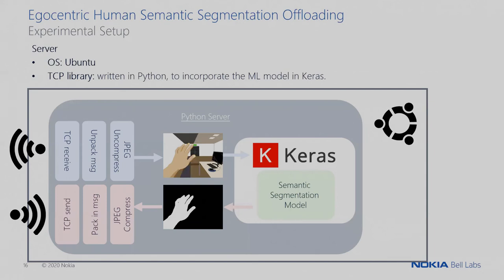On the server side we have a similar procedure, but everything is written in Python since Keras and the machine learning model are currently running in Python. We receive the TCP message from the client, unpack the message, decompress the JPEG, and then process it in the machine learning model. Finally, when we obtain the mask, we JPEG-compress it, pack it in a message, and send it back to the client.